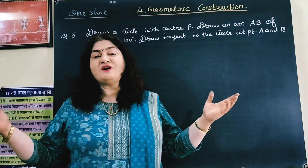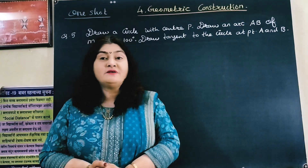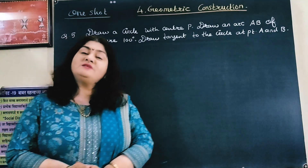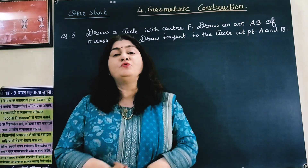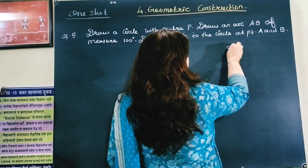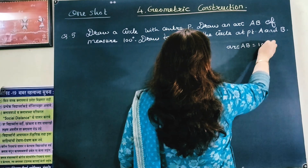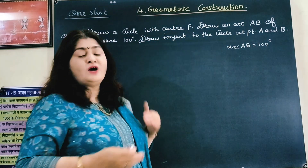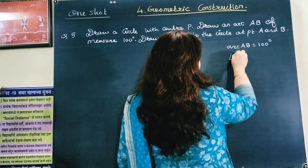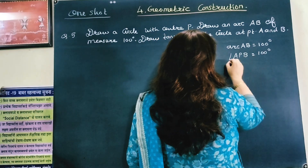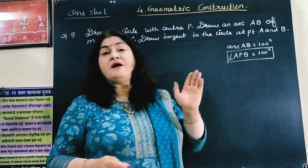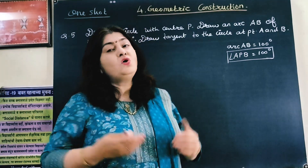Now we are on the fifth type of sum from geometric construction. We have to draw a circle whose center is P and draw an arc AB whose measure is 100 degrees. From points A and B we have to draw tangents. The measure of an arc equals the measure of its central angle, so the central angle APB will be 100 degrees. If we draw this central angle, the arc drawn will also measure 100 degrees.